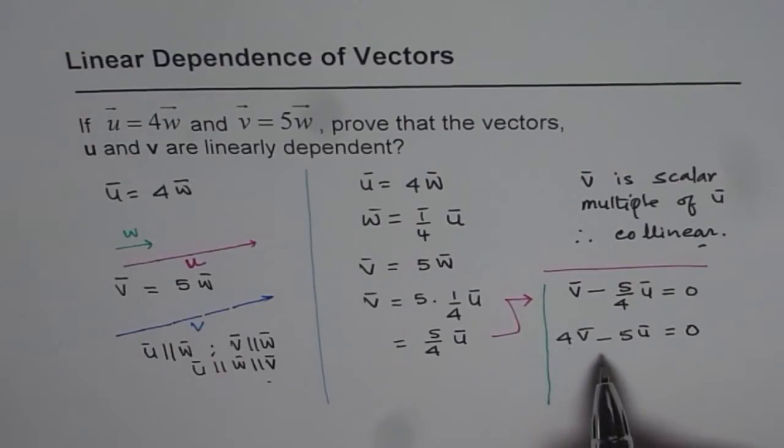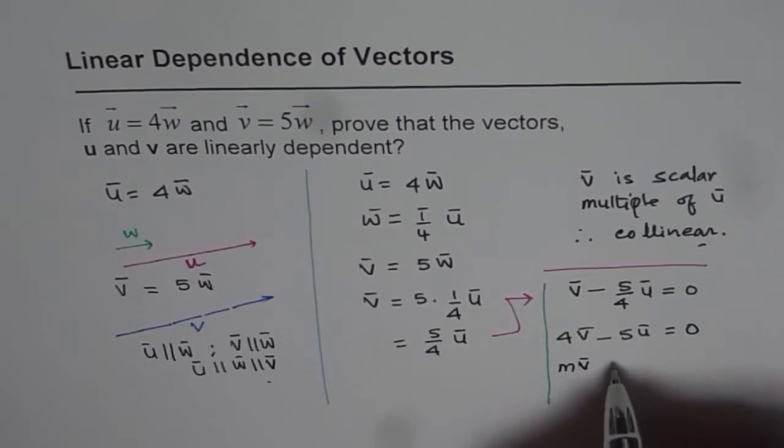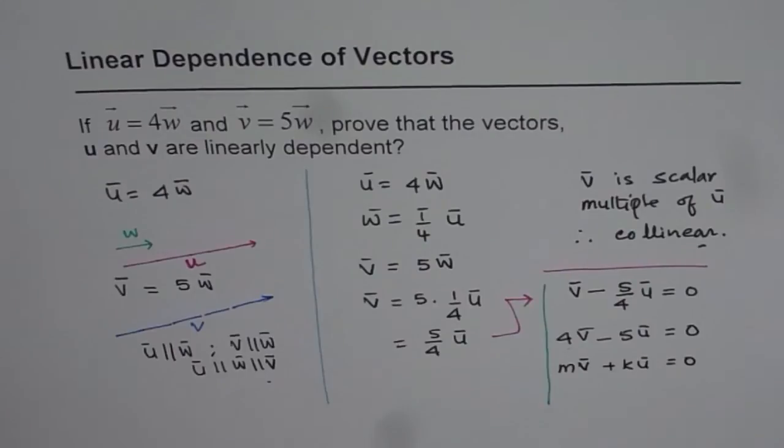And that is another way of proving that the vectors are linearly dependent. You remember, in general we can write m times v plus k times u equals 0. That is the linear combination. Either way, we could prove that these two vectors are linearly dependent.